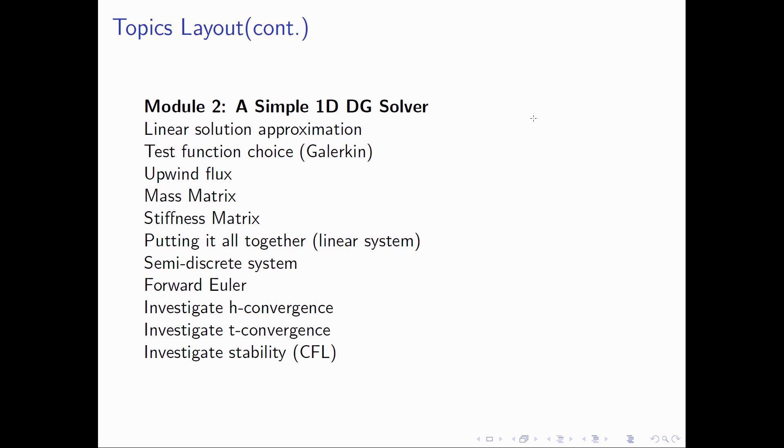Module two develops a simple one-dimensional linear solver. We'll use a linear solution approximation and then develop the mass and stiffness matrices, and then ultimately assemble the linear system. We'll then use a simple forward Euler time discretization to complete the method. We'll then investigate how this behaves.